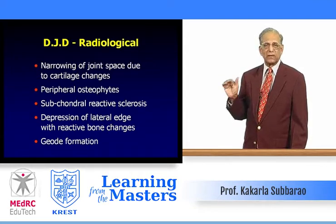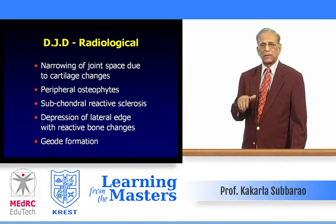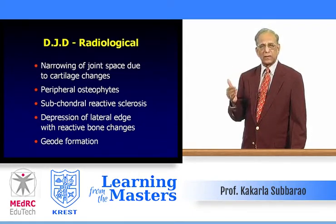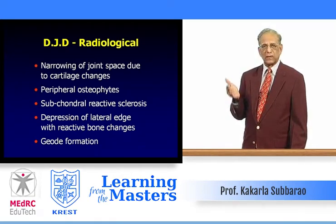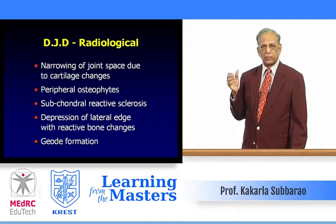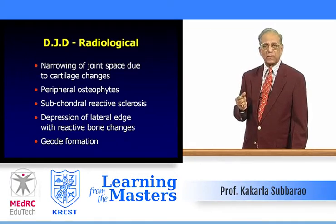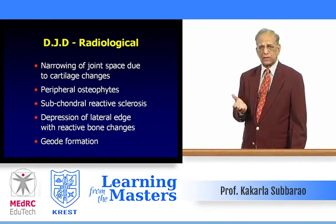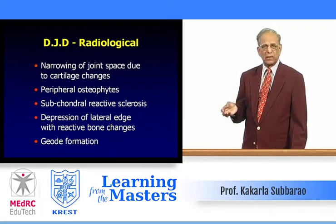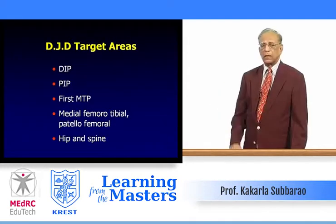Subchondral reactive sclerosis occurs to support the joint. Depression of the lateral edge represents reactive bone changes. Geode formation occurs because of pumping of intrasynovial pressure into the articular margins. You may find small loosened areas called subarticular cysts or geodes, which may contain serous or serosanguineous fluid on dissection.